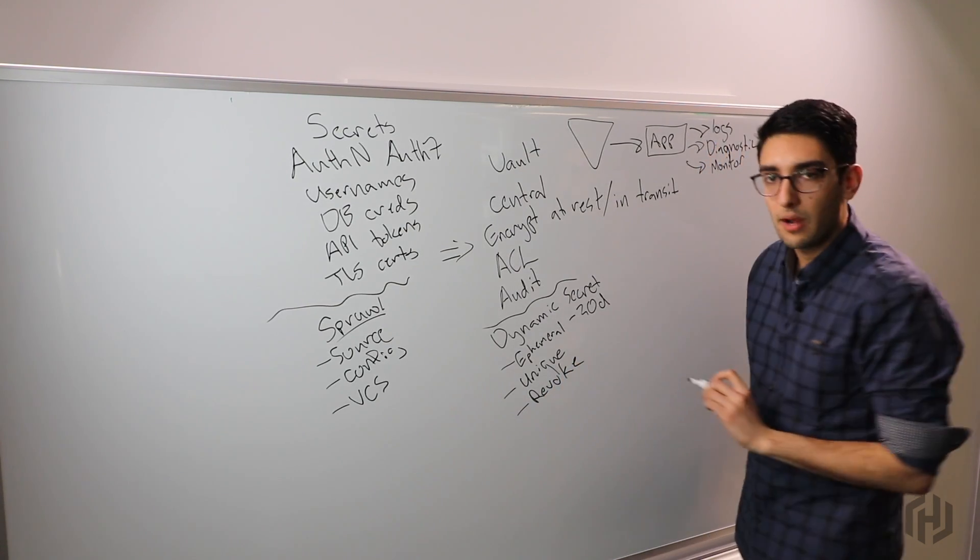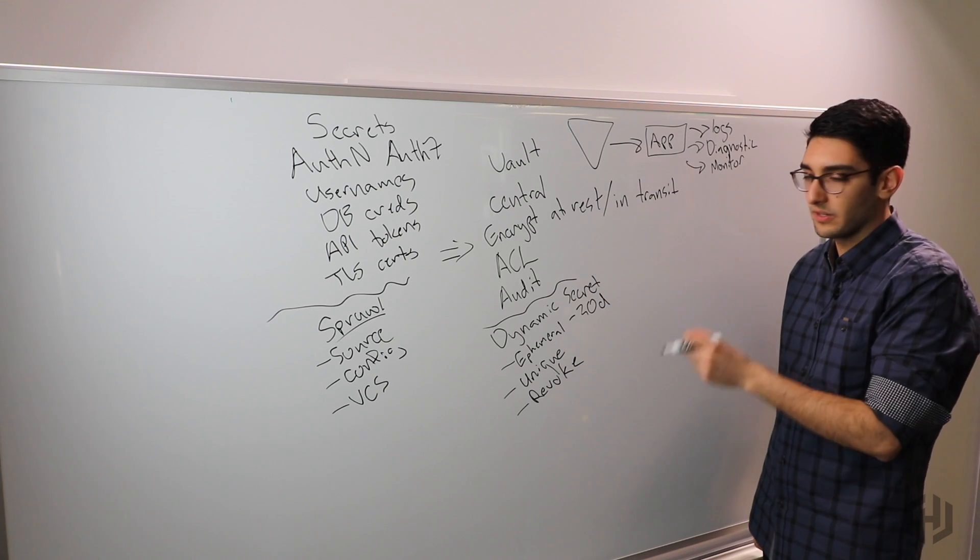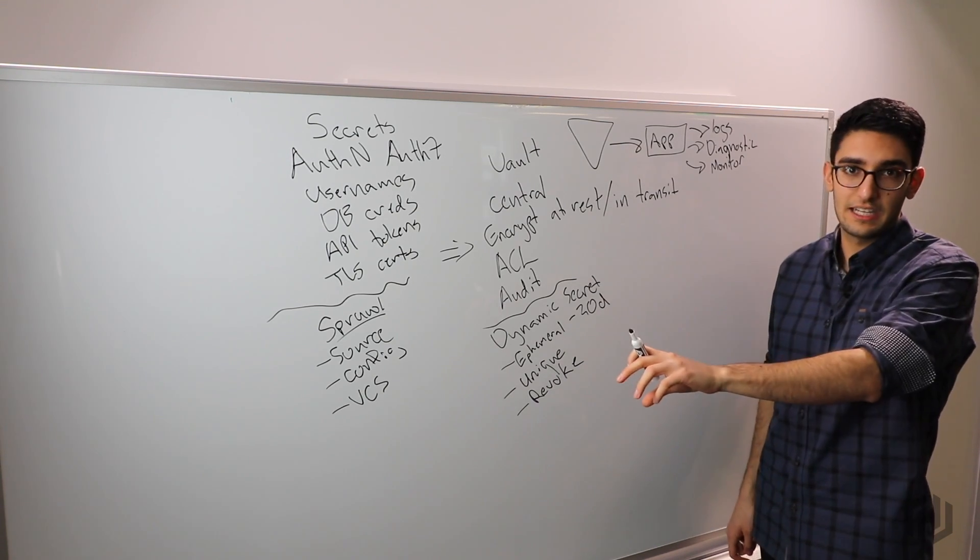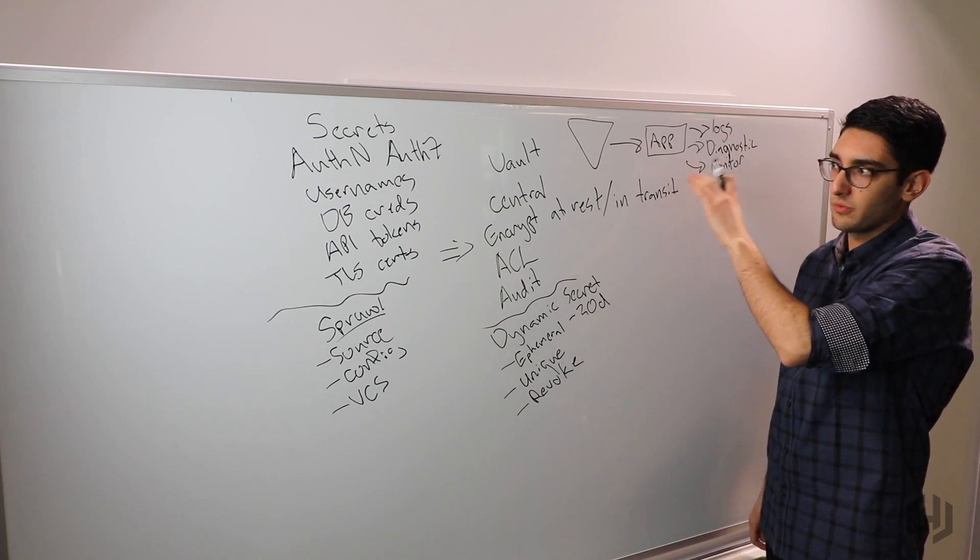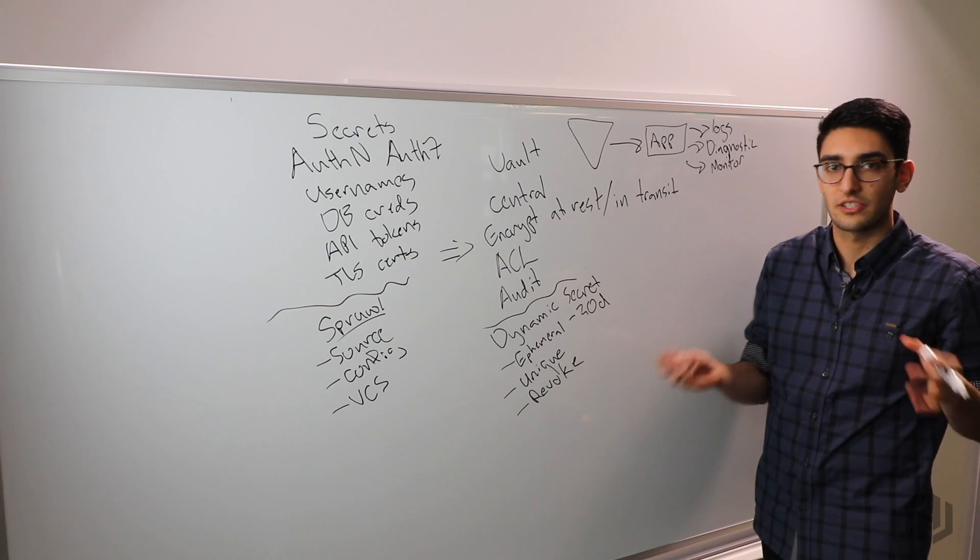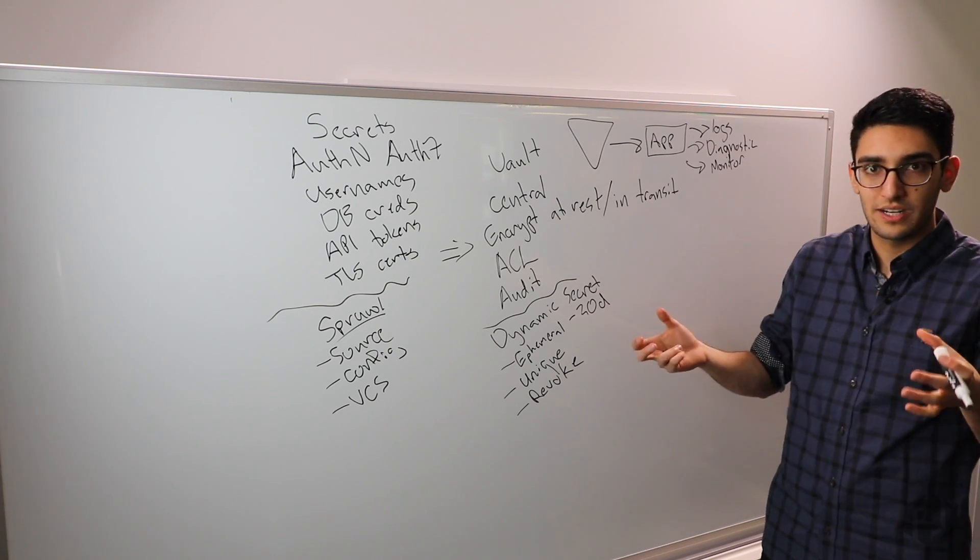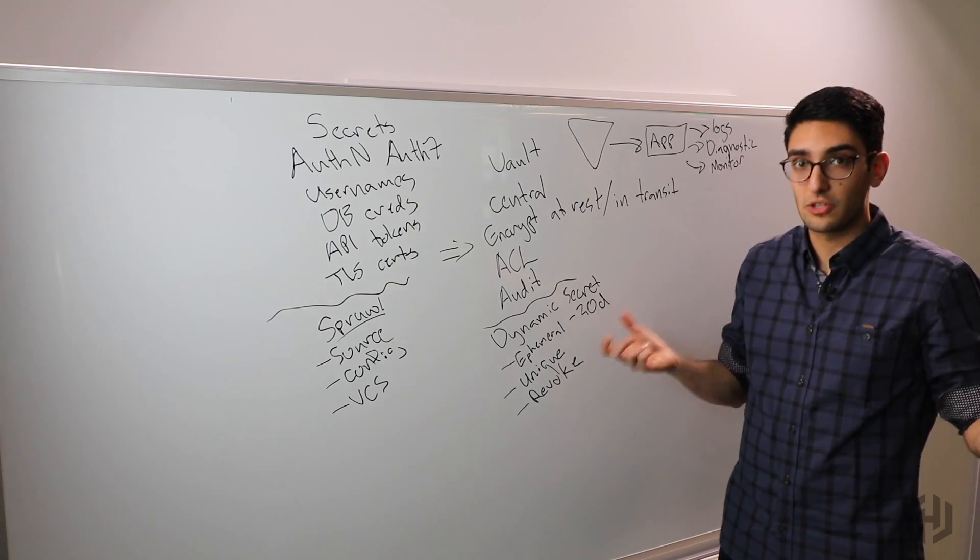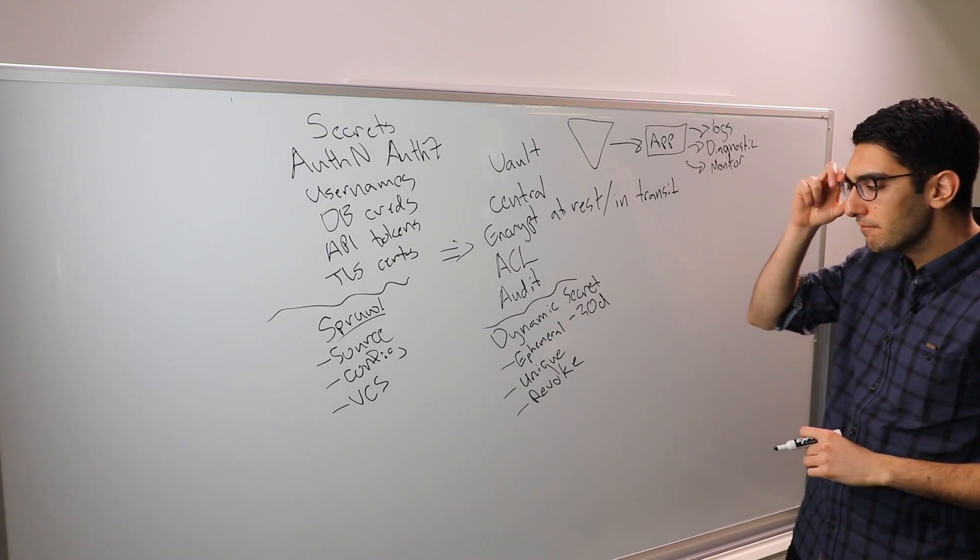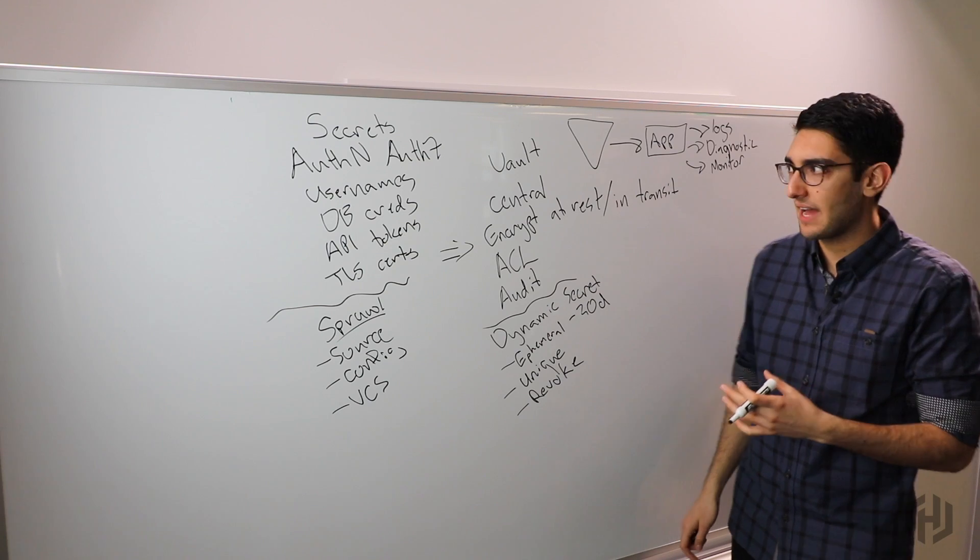But if all 50 machines were sharing the same username and password, the moment we try to revoke it we'd cause the entire service to have an outage. The blast radius of a revocation is much larger when you have a shared secret versus a dynamic secret. The third challenge we found was that applications are often storing data ultimately.